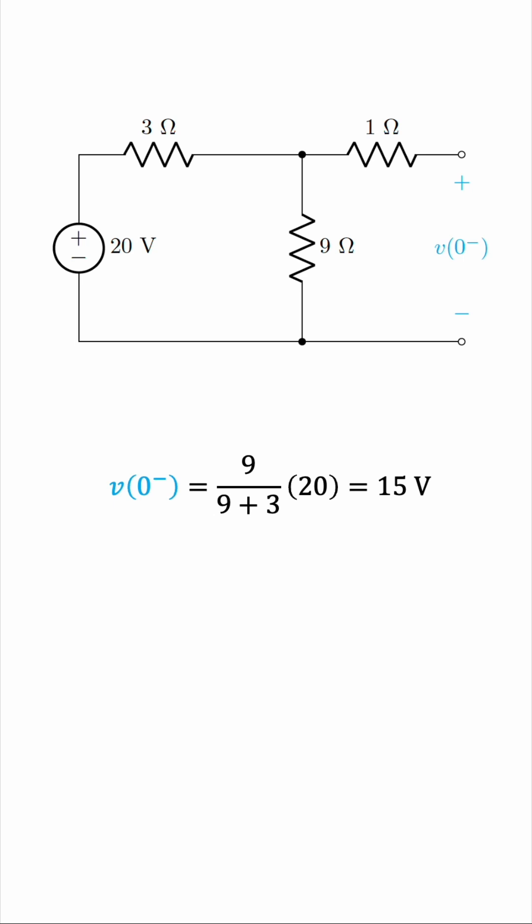And here's a very important point to keep in mind whenever you're solving such questions. V of zero minus is the same as V of zero, is the same as V of zero plus. What does that mean? This means that the voltage across the capacitor, just before the switch is opened, is the same as the voltage across the capacitor at the moment the switch was opened, which is the same as the voltage across the capacitor just after the switch is opened.